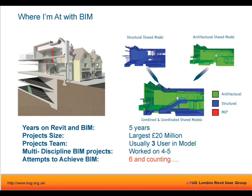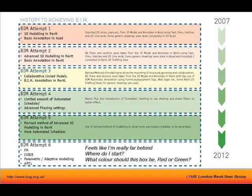Just to give context on where my knowledge is coming from: I've been using Revit for about five years, the largest project was probably about 20 million, and I've only really worked with about three people on a project. This ties in with the next slide — how many attempts did it take me to achieve BIM, or where I'm at with BIM — and it also relates to modeling.